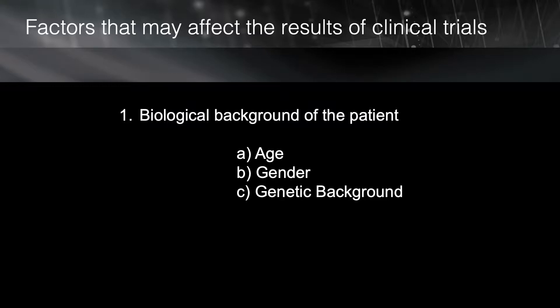Similar considerations apply to gender and genetic background of our patients. You can see the importance of these factors in changing the result of the study when comparing animal studies with human studies. In animal studies, where we control the age, sex, and genetic background of the animals, almost every study demonstrates a significant increase in rate of tooth movement in response to the trauma. However, in human studies, when we ignore these three important factors, the confusion starts.